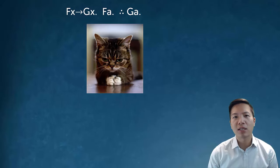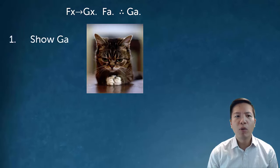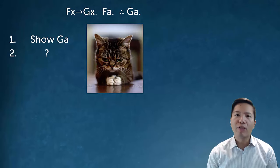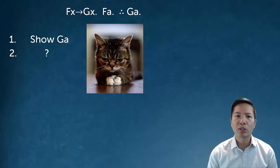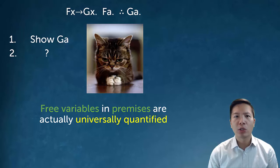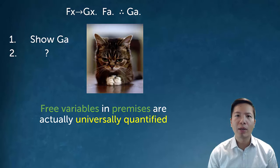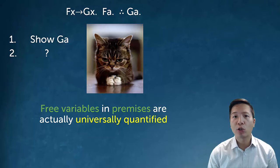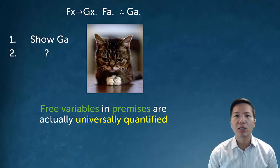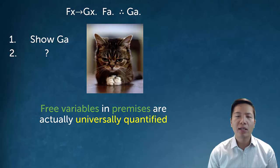Let's take a look at this example: fx arrow gx, fa, therefore ga. And if you recognize this, this is sort of the evil cat example. Now, when I actually want to do this derivation, I run into a problem. I want to show ga, but then what can I do? In fact, nothing actually lines up. I can't use premise one with premise two because one is in terms of x and the other in terms of a. So this derivation just won't work. Well, the reason why is because fx arrow gx just is sort of weird. It's just this unbound free variable premise. But the convention turns out to be that if you have free variables in a premise, it's actually a hidden code that they should be universally quantified.